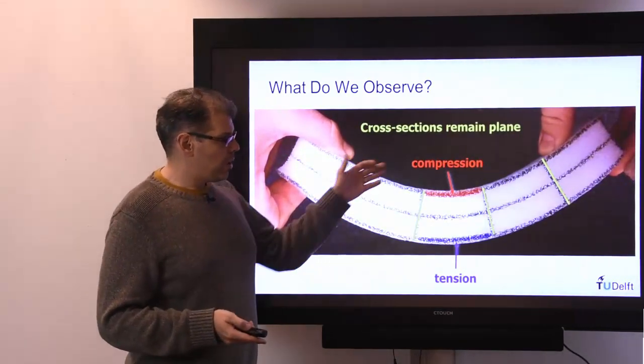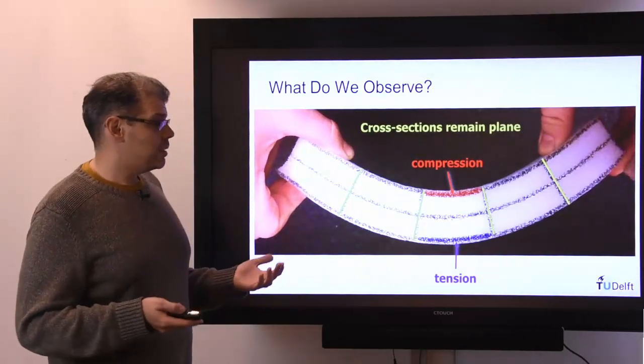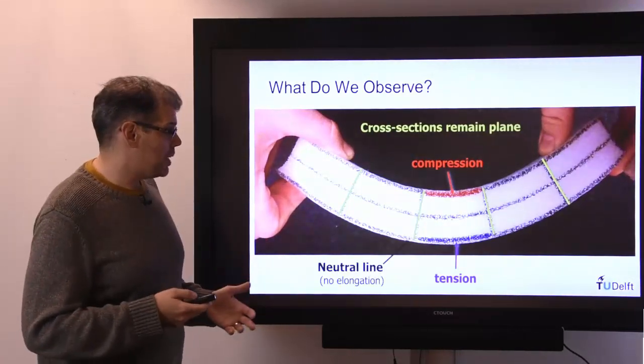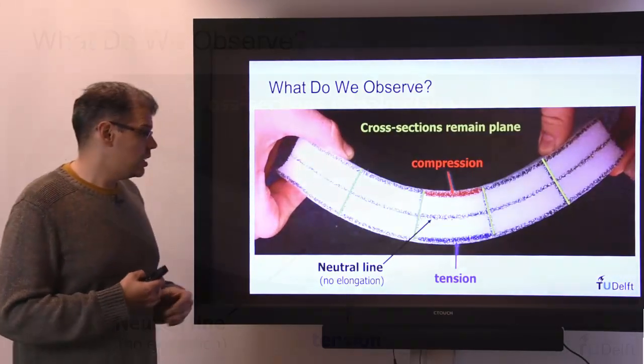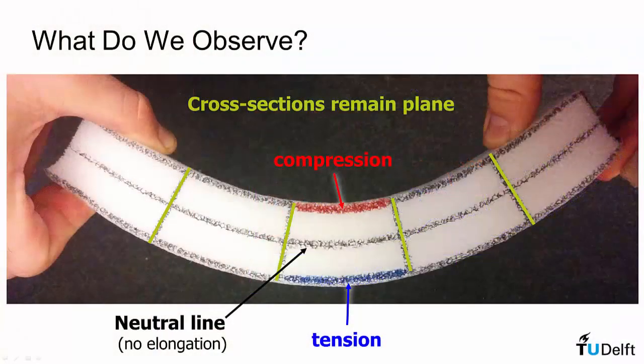And because we have compression on one side and tension on the other side, there has to be some point, although it may not be exactly there, in this case I know a priori it is, but we know there must be a line or a fiber within the beam in which there is no elongation, no deformation.